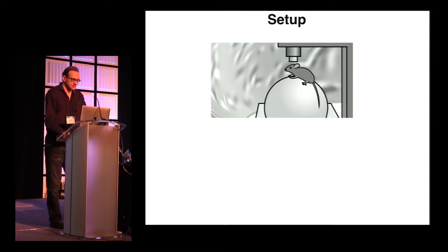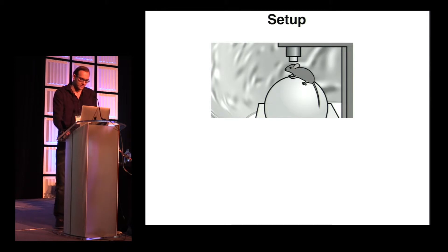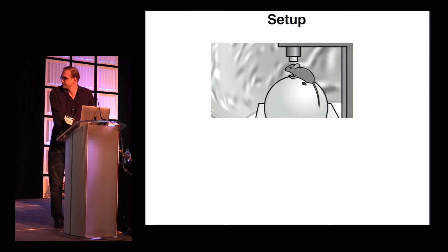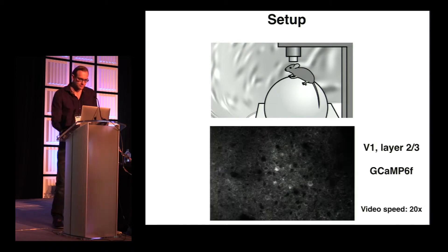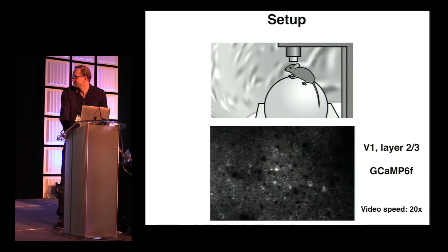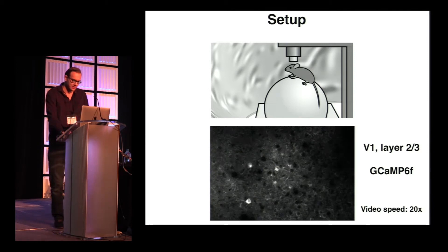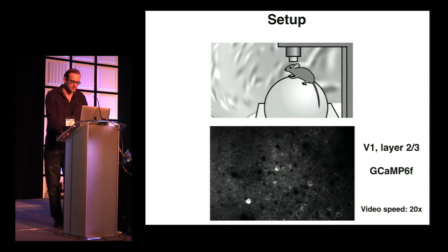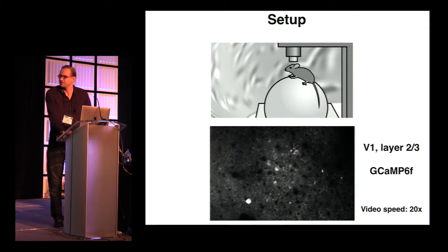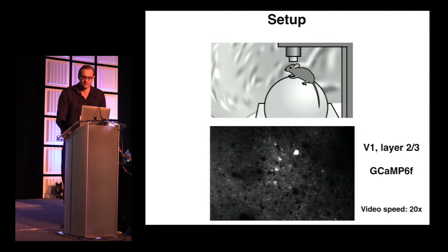We placed a screen around an awake mouse and projected different images. Simultaneously, we imaged neural activity through a cranial window with a two-photon microscope. We recorded from layer 2/3, with excitatory neurons expressing GCaMP6 fast, which is a calcium indicator. We recorded activity from about 100 neurons at the same time.